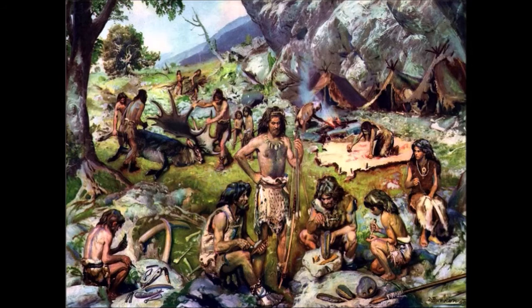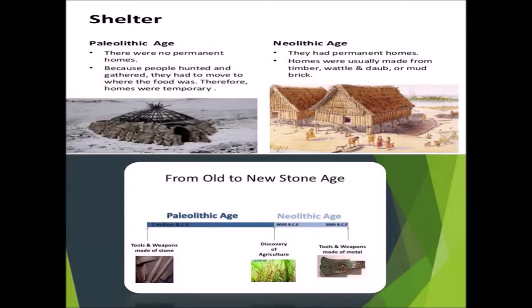Ancient Civilizations – Introduction. Early societies were hunters and gatherers. They were called nomads and moved from one place to another. Early societies slowly organized themselves from the Paleolithic age – the old stone age – to the Neolithic age, the new stone age.